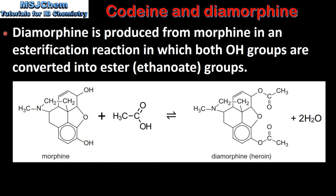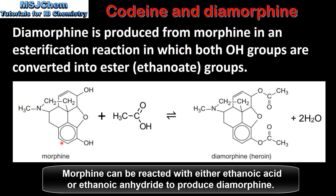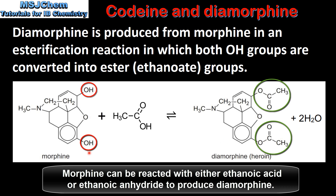Next we look at the synthesis of diamorphine. Diamorphine is produced from morphine in an esterification reaction in which both hydroxyl groups are converted into ester groups. In this reaction morphine is reacted with ethanoic acid to produce diamorphine and water. As you can see, the two hydroxyl groups in morphine are replaced by two ester groups, making diamorphine a less polar molecule and more lipid soluble.